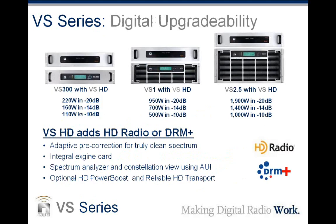These transmitters can be upgraded to digital — you can add the VS HD and HD capability. We've also got DRM+ on these transmitters. The VS HD has the capability of adapting DRM+ to work with the VS series. The VS HD is, in a box, not only the adaptive pre-correction type exciter but also the XGen card. It does not include the exporter or importer — you would buy those separately. You can get HD power boost and reliable HD transport as options for the VS series with the VS HD.